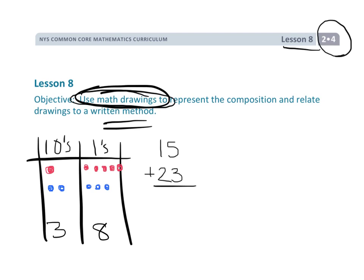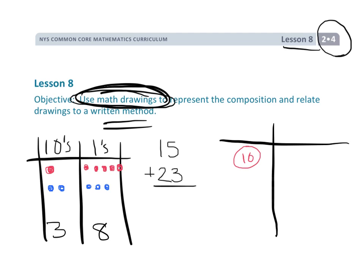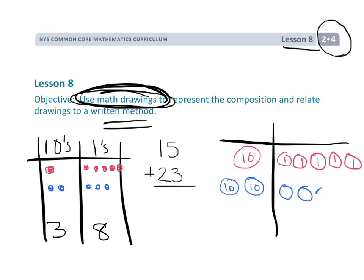Today students are going to learn how to use math drawings — essentially a drawn representation of the manipulatives on paper. To model 15, they'll draw a circle labeled with 10 and then five circles labeled with ones. To model 23, they'll draw two circles with tens and three circles with ones. Again, no regrouping is necessary and the answer is 38.